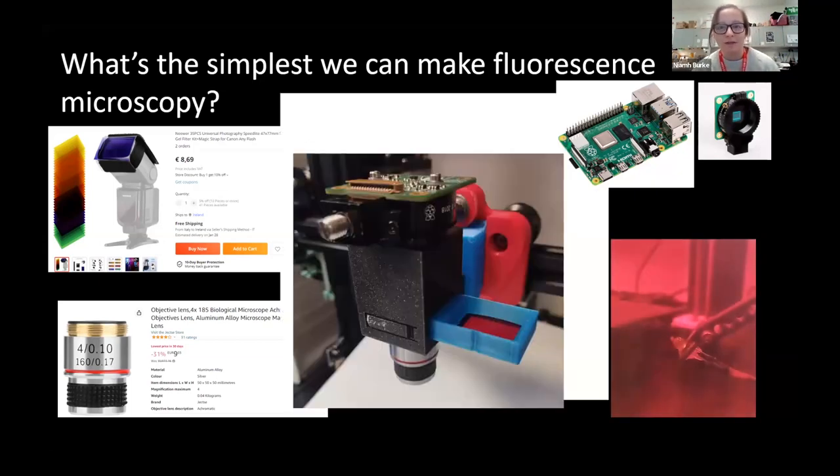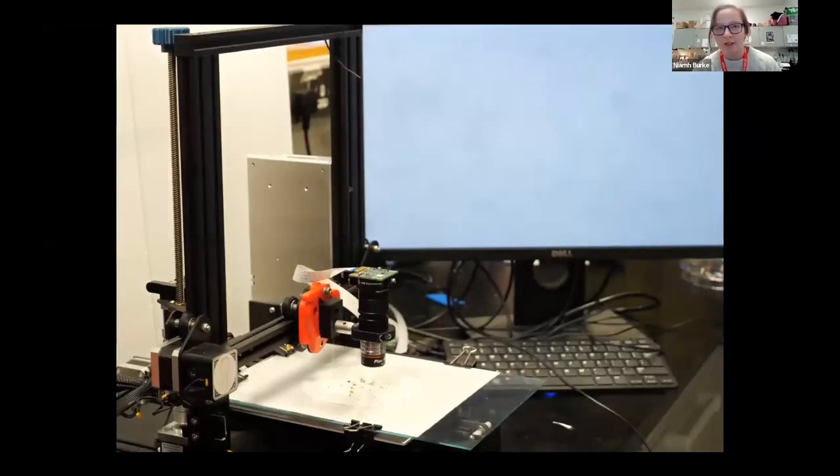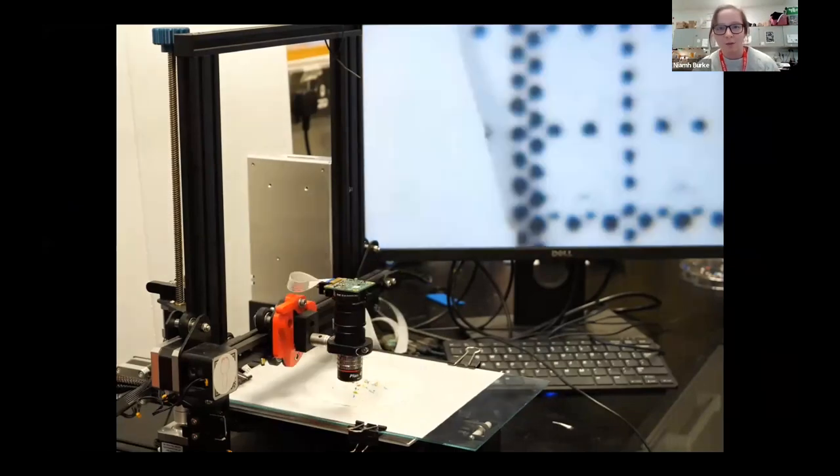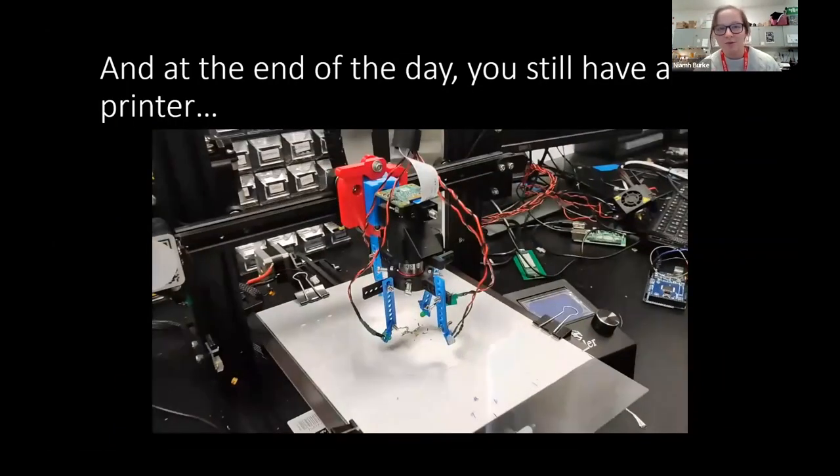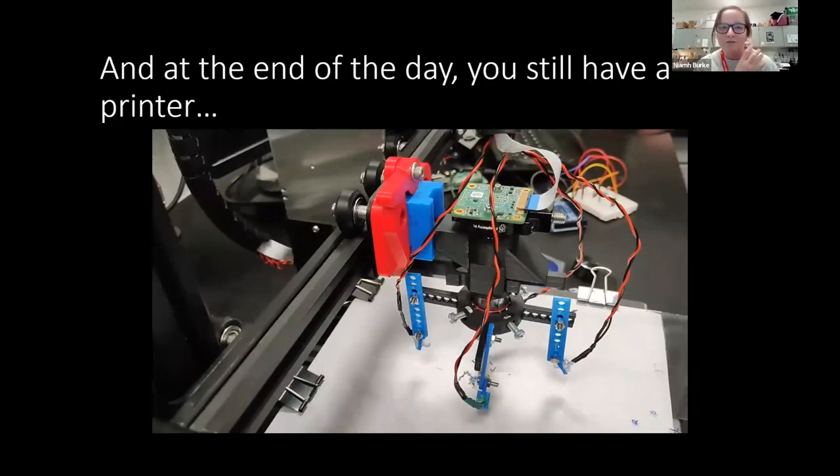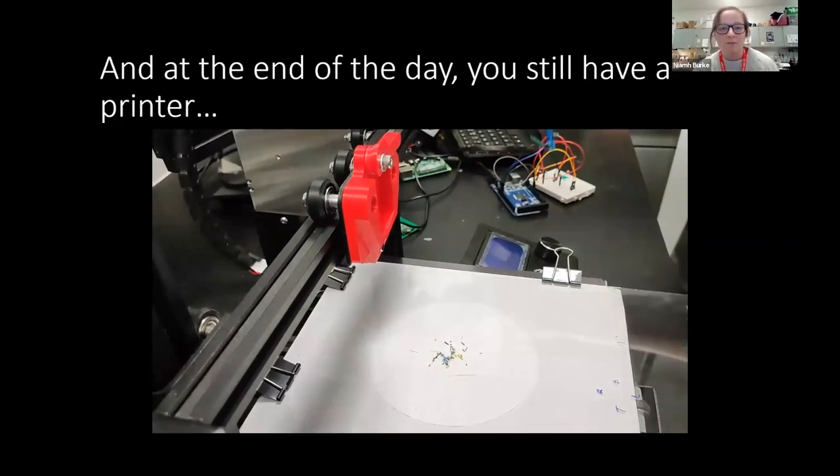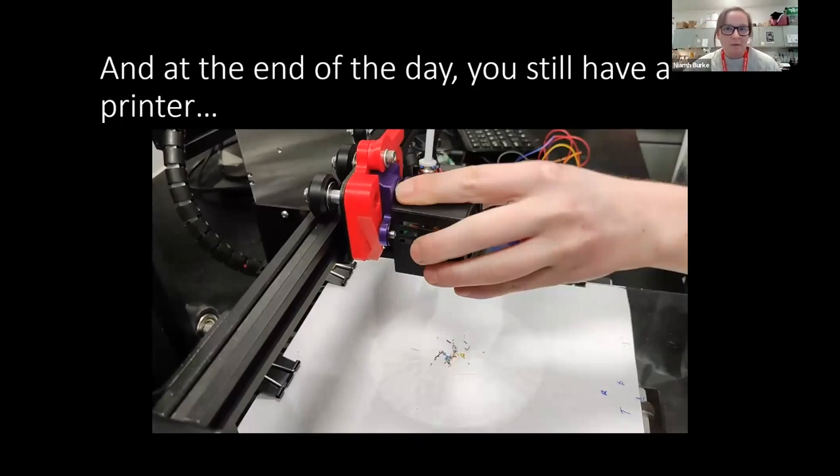We're just going to 3D print all the other bits. Now we have a super simple fluorescence microscope that we can just stick onto our 3D printer, and we have the Endoscope. The best thing about this is that you keep the 3D printer intact, so you can still have your 3D printer. We've designed a tool that allows you to swap back and forth between 3D printer and microscope really easily.